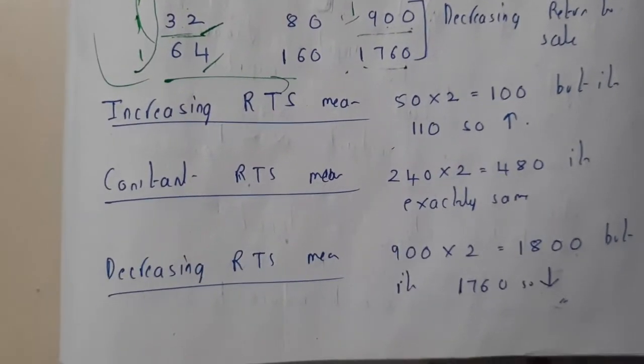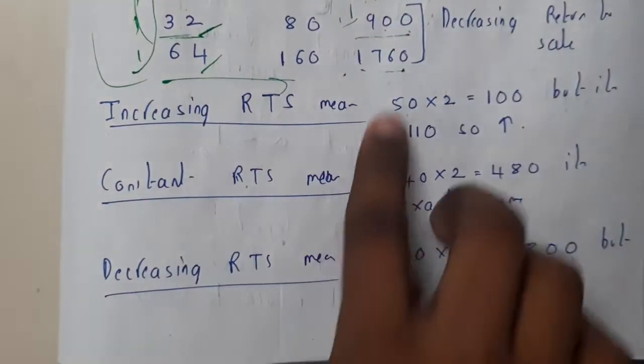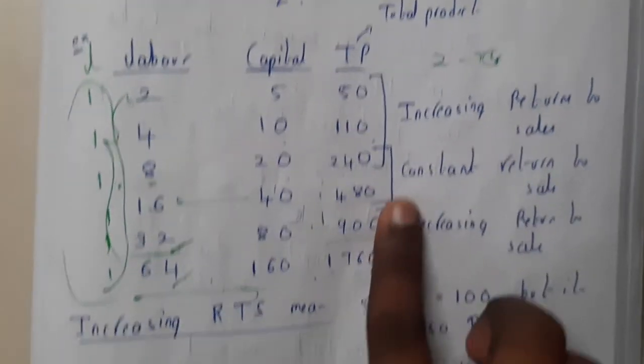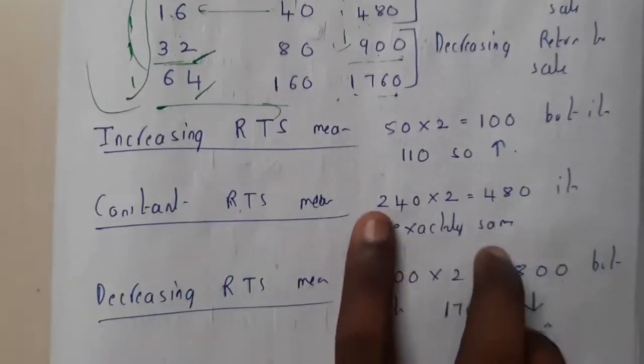I wrote increasing rate of return here, constant here, and decreasing here. That's what I have just written again.